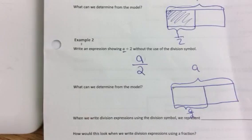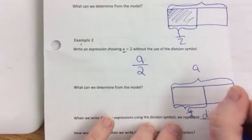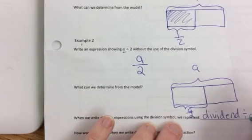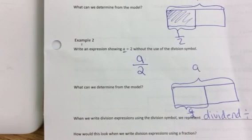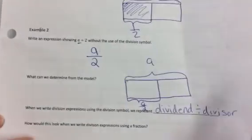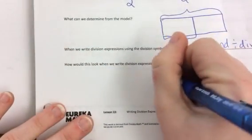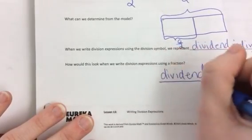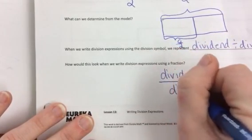When we write division expressions using division symbol, we represent the dividend, so this is vocabulary, divided by the divisor. How would this look as a fraction? So it's the dividend divided by the divisor here. As a fraction, your dividend goes in your numerator.